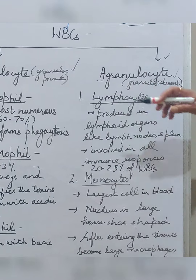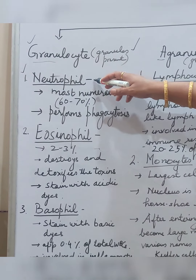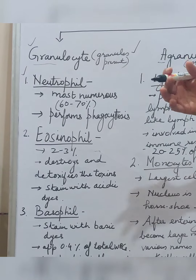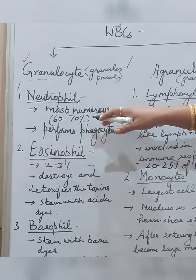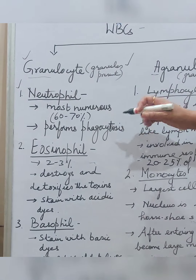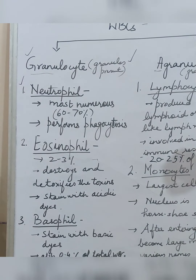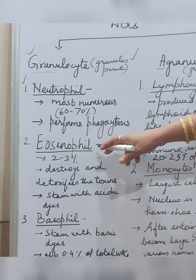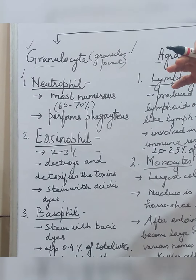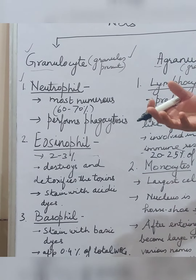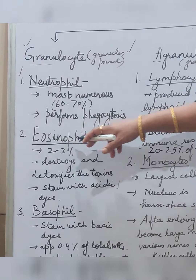Agranulocytes are divided into lymphocytes and monocytes. Among granulocytes: eosinophils make up about 2 to 3% of WBCs. They destroy and detoxify toxins wherever toxins form in the body. When stained, they take up acidic dye — hence the name eosinophils. Basophils make up about 0.4% of total WBCs. They are involved wherever there is inflammation in the body and secrete heparin, histamine, and serotonin.